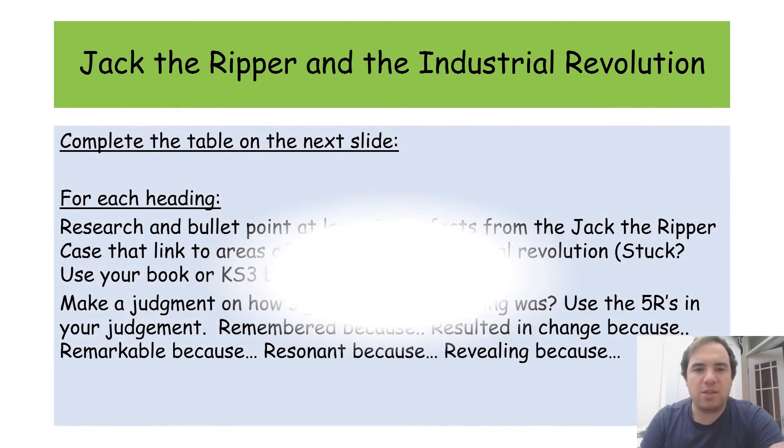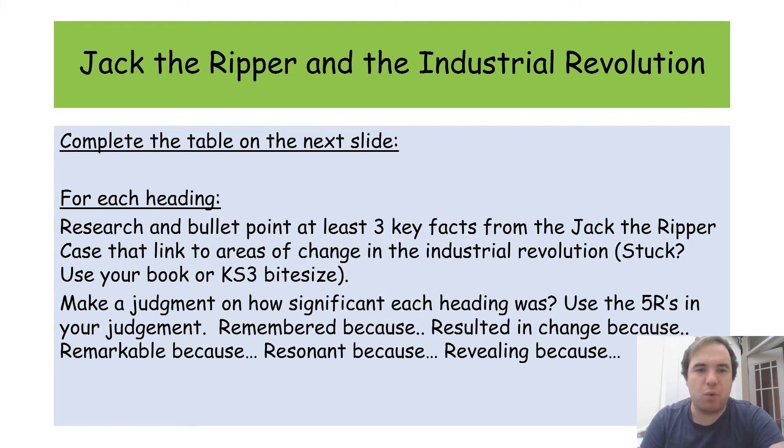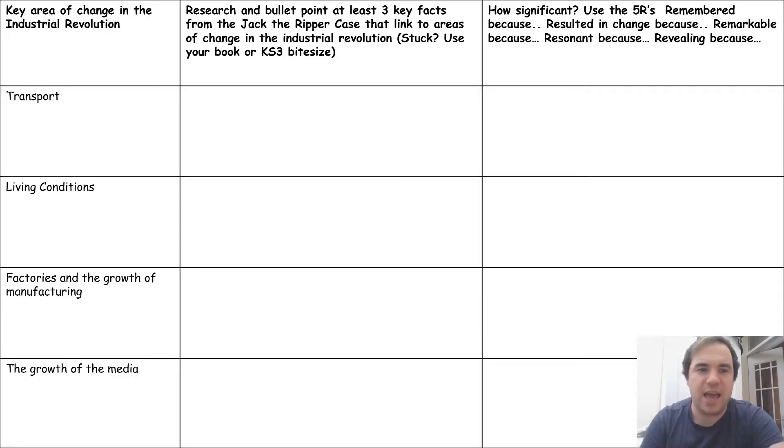What you had to do was to complete the table on this slide here on these four areas: transport, living conditions, factories and growth of manufacturing, and the growth of the media. Now I realise because you haven't got your exercise books that this might be quite tricky in terms of looking back on what you've done previously.